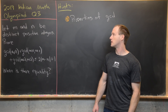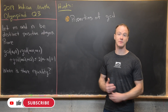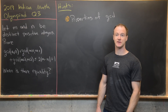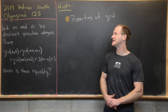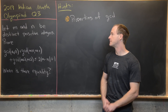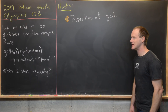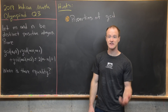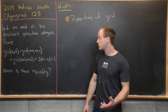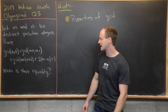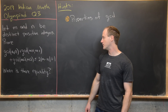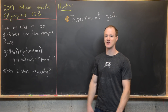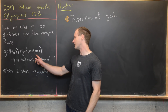Here we're going to look at a nice viewer-suggested problem. This is from the 2019 Indian Math Olympiad, question 3. We want to suppose that M and N are positive integers and they are distinct. Our goal is to prove that GCD(M,N) + GCD(M+1, N+1) + GCD(M+2, N+2) is less than or equal to 2 times the absolute value of M minus N plus 1. Then we have a final question: when is there equality?